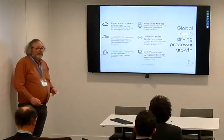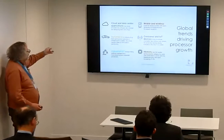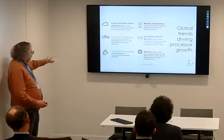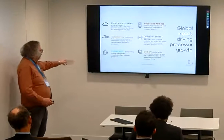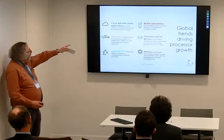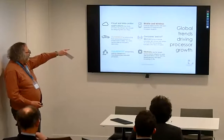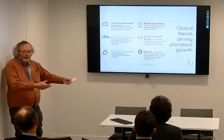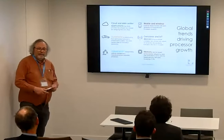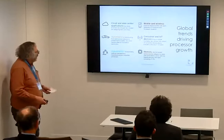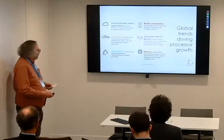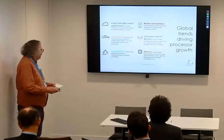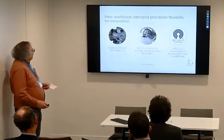If you take a step back and look at the global trends driving processor growth, we can see cloud and data centre applications. Automotive is going to be a big one — driverless cars — with a lot of research going into that at the moment. Industrial IT, that's Industry 4.0 as some people call it. Mobile and wireless is again a big driver. Consumer IT devices — we've started to see increasing adoption of consumer devices, like Alexa and Google. And of course memory: memory is a large indexed category of chip sales at $158 billion in 2018, with a very fast-growing rate of growth — 27% year-on-year.